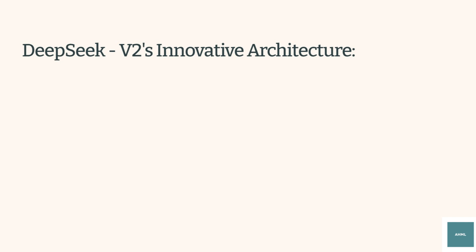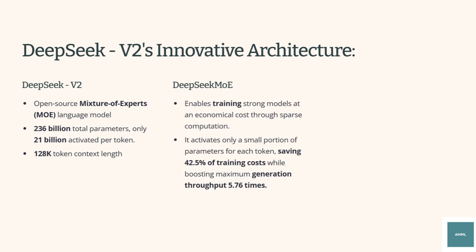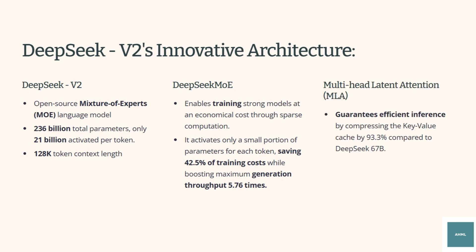DeepSeek V2 is a decoder-only language model with 236 billion total parameters, with only 21 billion activated parameters per token. It supports a 128k token context length and achieves significantly stronger performance than DeepSeek 67B. Its MoE architecture cuts training costs by 42.5% while boosting generation throughput 5.76 times. Its multi-head latent attention architecture reduces KV cache by 93.3%, ensuring efficient inference.